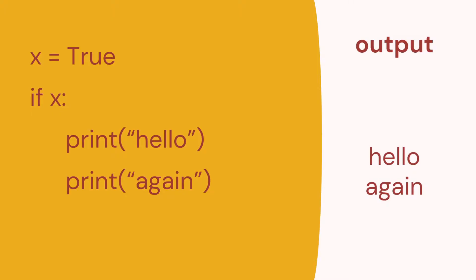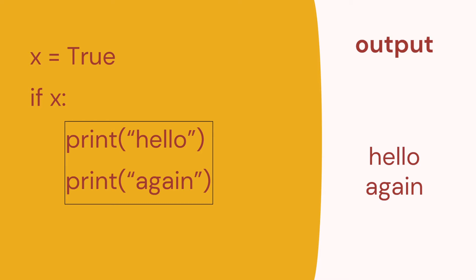We can look at some examples now. Here we can see two print statements in Python that are part of the if statement. It prints 'hello' and again prints both print statements because x is true. You can see that block of code is part of the if statement.